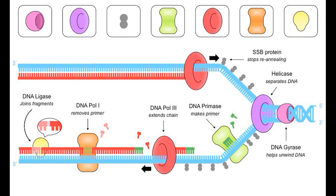Also, note how the same template strand is the leading strand at one replication fork, and the lagging strand on the other. The two replication forks proceed until the entire chain is replicated. Eventually, you end up with two new double-stranded DNA molecules, produced in a semi-conservative fashion.